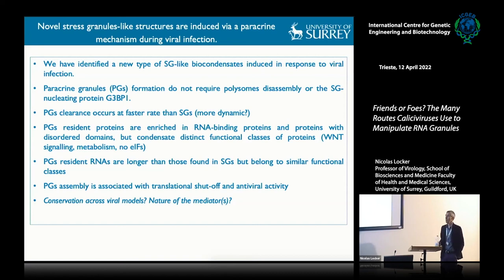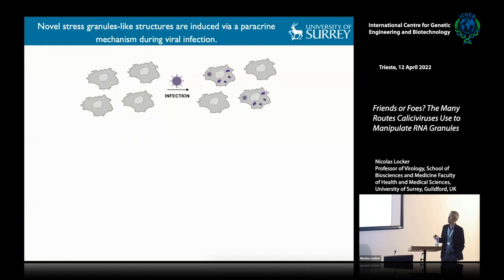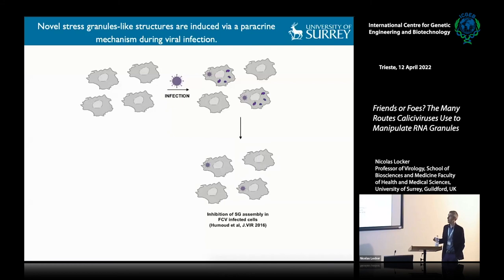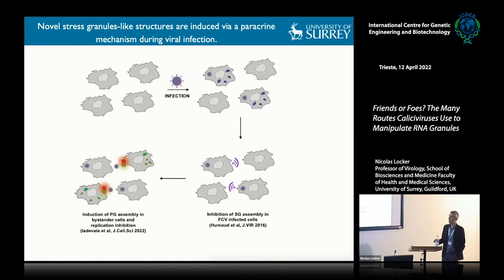We haven't got the answer to these questions yet. But we can present a model in which, for feline calicivirus, early during infection there is sensing of the virus and induction of stress granules, which are then disassembled by the viral protease that cleaves G3BP1. At this stage, infected cells signal to uninfected bystander cells, inducing assembly of paracrine granules that, in our model, slow down or reduce propagation of viral particles and slow down infection.